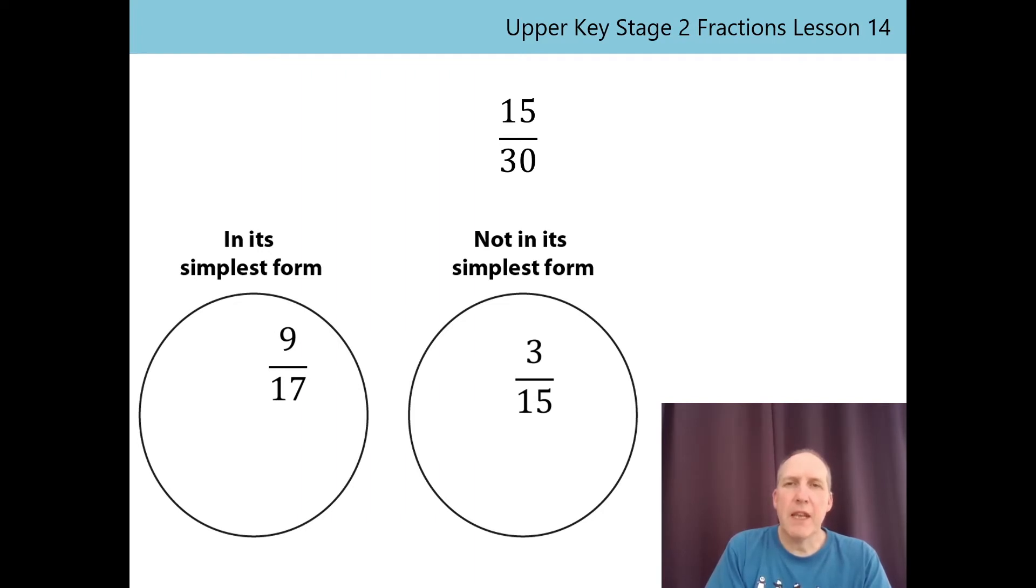Let's look at 15/30. That isn't in its simplest form either, and there are a few different ways I can think about it. Firstly, look at the vertical relationship. 15 is a half of 30, so I know that I can simplify 15/30 to one half. I've also spotted that 15 and 30 are products in the same times tables, the 3 times table and the 5 times table. And finally, the numerator 15 is a factor of the denominator.